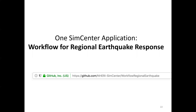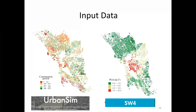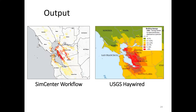This is an example of one application developed using the SimCenter framework — we call it the workflow for regional earthquake response. It's available on GitHub at the following URL if you're interested in downloading the source code. One example run we've done took the Bay Area buildings, combined them with seismic simulation input, produced output, and compared it with the recent Haywired event. Wael will talk about this in his presentation.